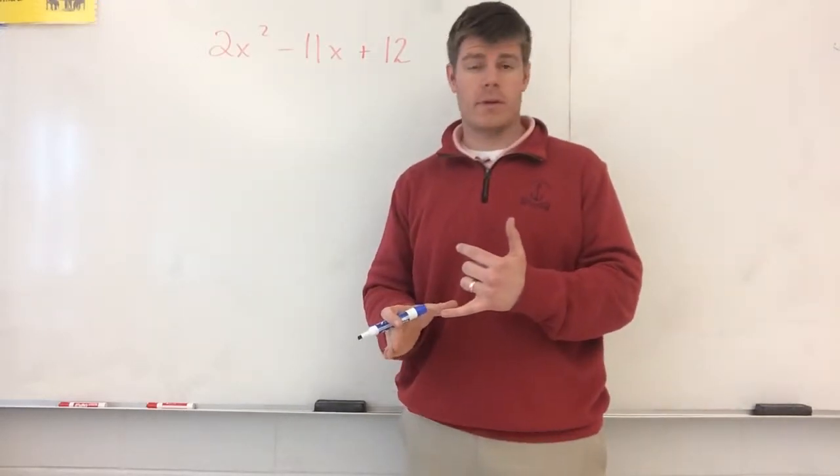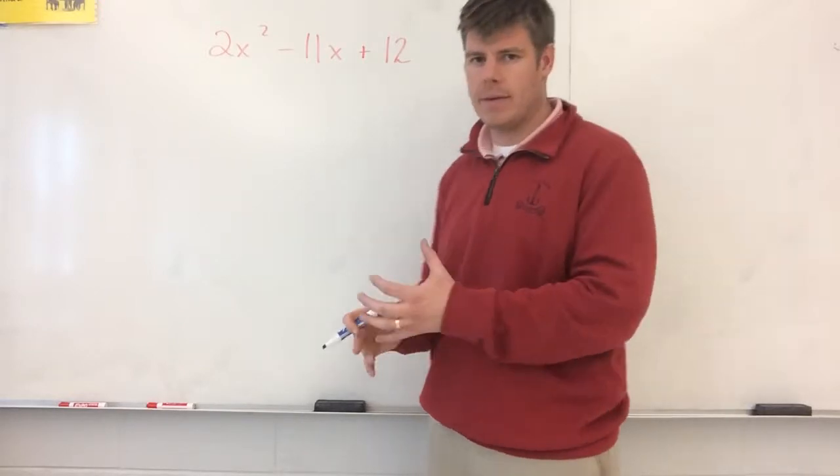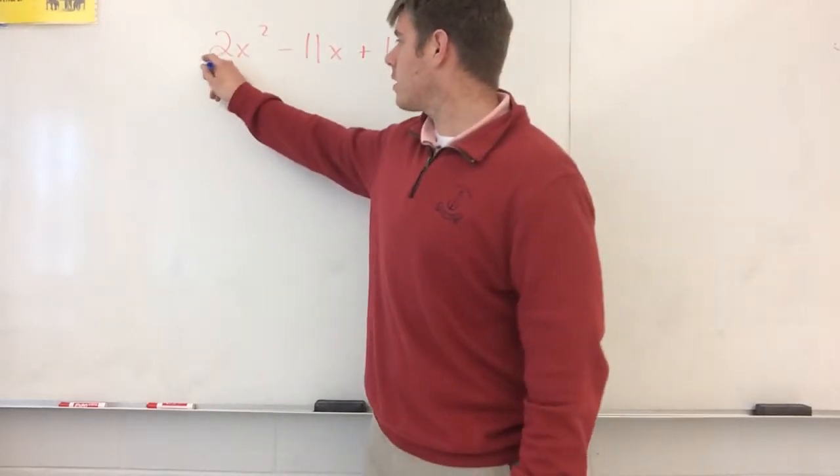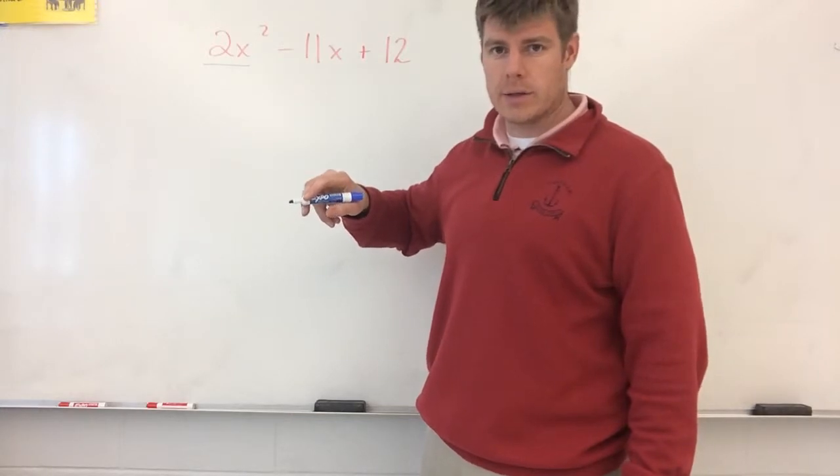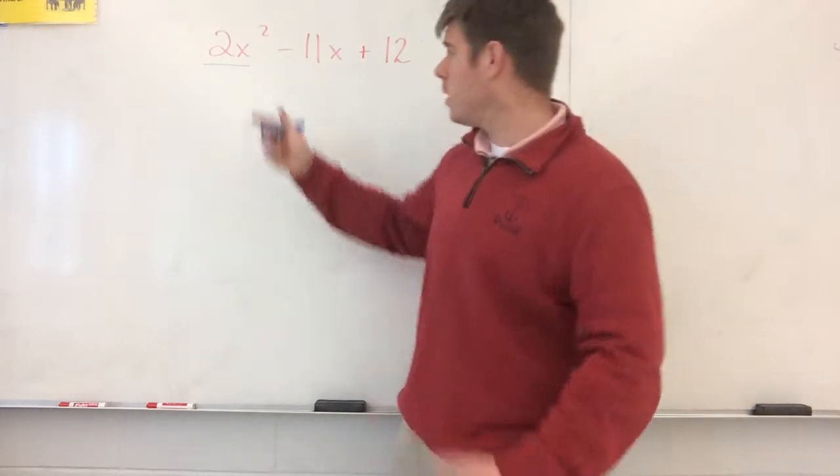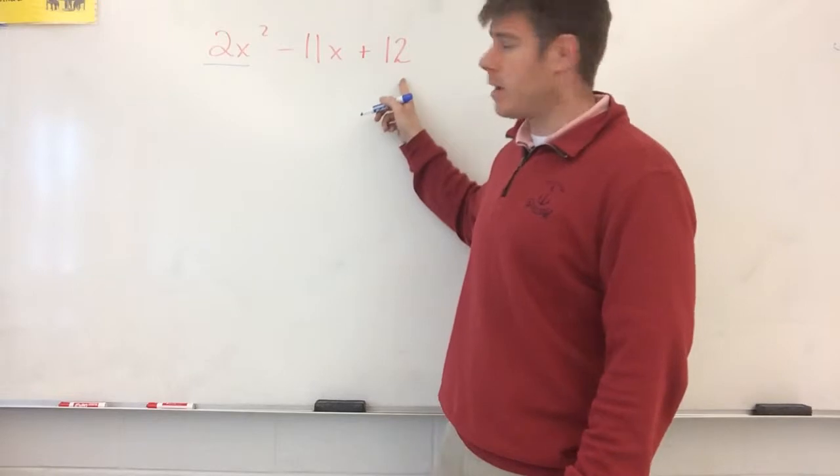This grid method is used for something called the AC method. The AC method basically says that we take the, in a quadratic, we take the ax squared term, so basically your quadratic term, your x squared term, you multiply it by your constant term.